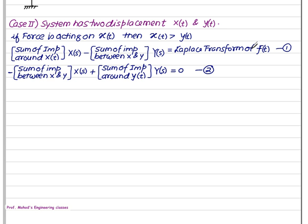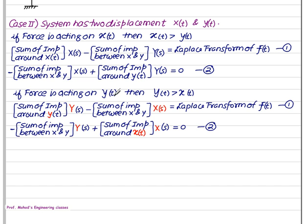The second equation is: −(sum of impedances between x and y) × X(s) + (sum of impedances around y) × Y(s) = 0. You substitute and solve this matrix using Cramer's rule and then find the required transfer function. If the force is applied on y(t), then y(t) is greater than x(t).